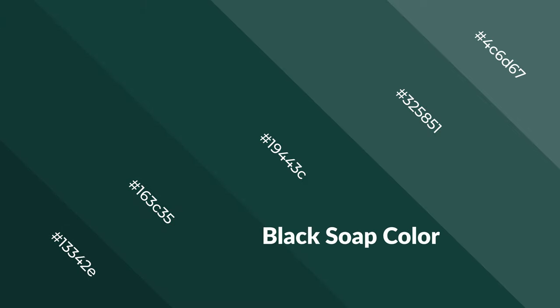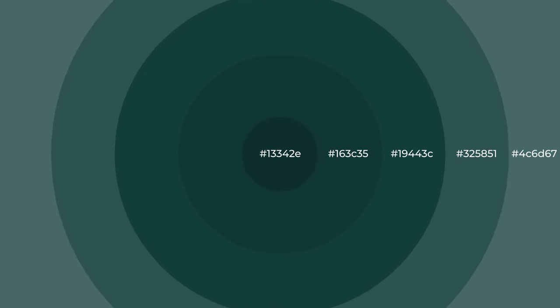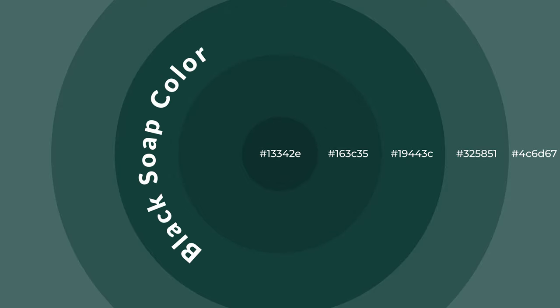Cool colors are like water, ice, sky, grass, soft, and snow. You can see them used in baby products.